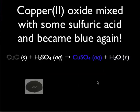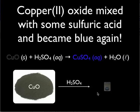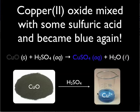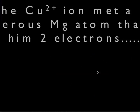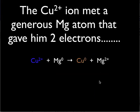We can get our blue solution back if we take copper two oxide and add sulfuric acid. What's going on here is we're taking two compounds and reacting them, swapping ions to give two new compounds. The sulfate from sulfuric acid is now paired with the copper two ion, and we also form water. This is a double displacement reaction because we're displacing two compounds to form two new compounds, going from our black precipitate back to our blue copper two ions.